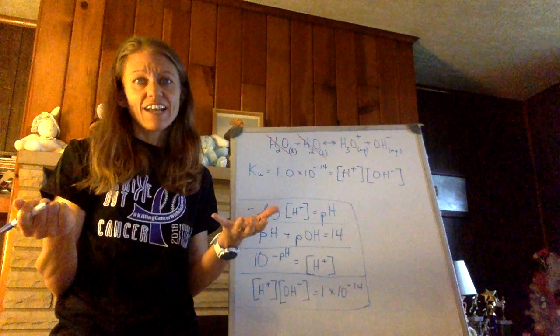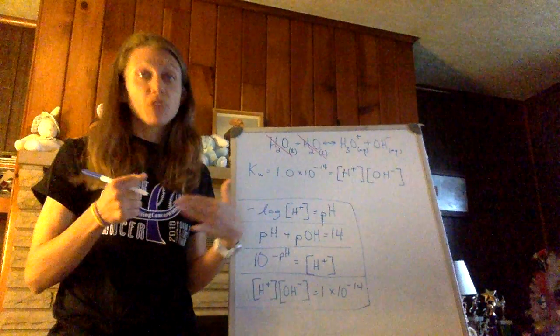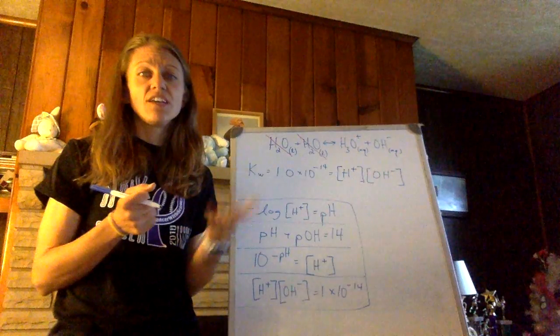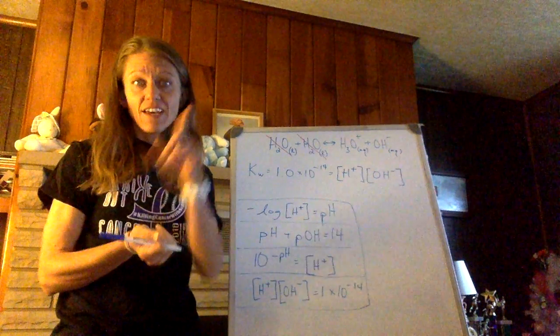I like this last one. It was easy. If my pOH is 3.75 and pH plus pOH is 14, then 14 minus 3.75 is 10.25. Easy.